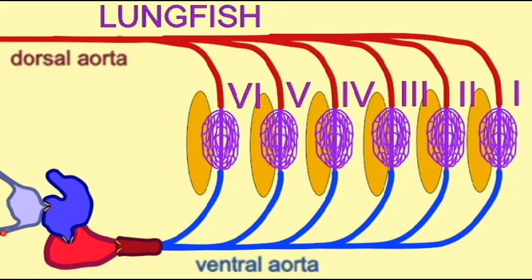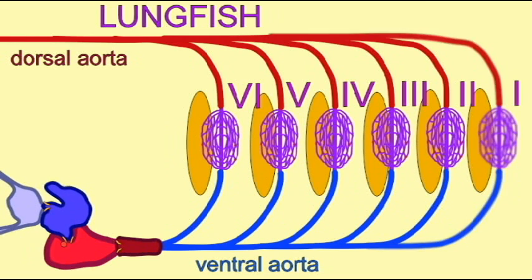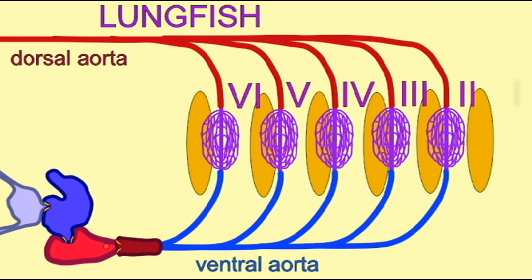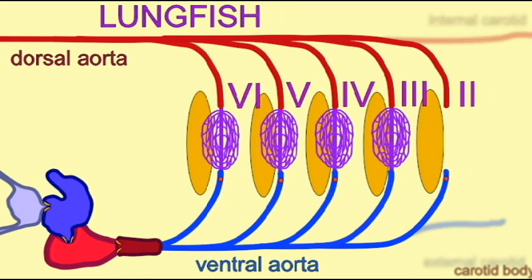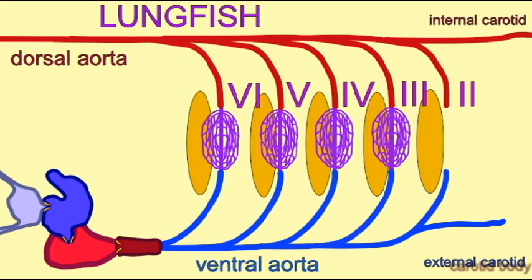All vertebrate embryos begin with this basic aortic arch pattern, but the land vertebrates have modified this to accommodate their new form of respiration. The first amphibians evolved from sarcopterygian fish, and the aortic arches of a frog are a bit different from those of lungfish.